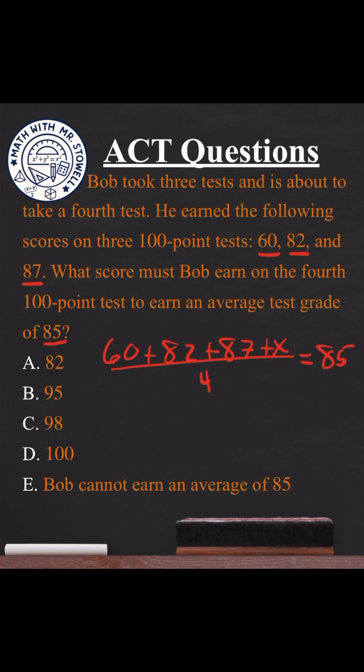Adding those values up in the numerator, we end up with 229 plus x divided by 4 equals 85. To solve for x, multiply both sides by 4.